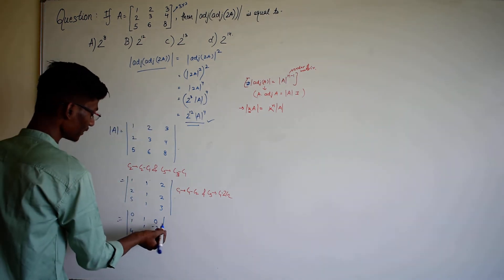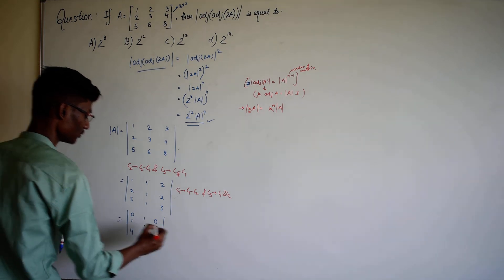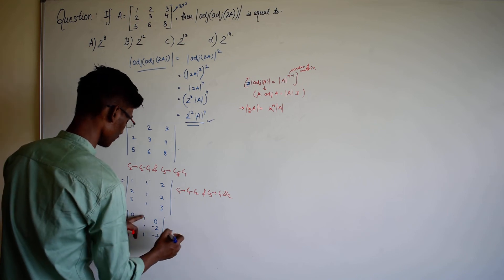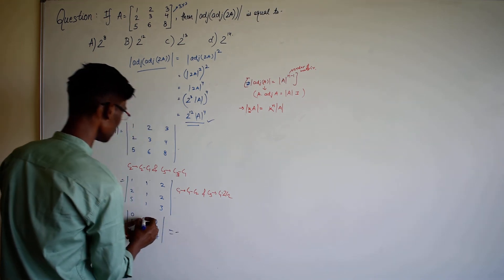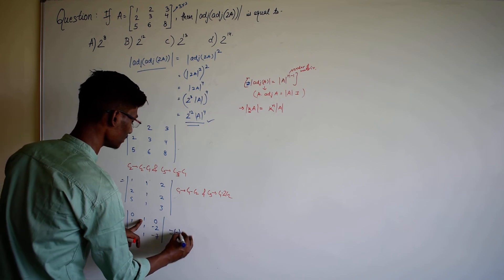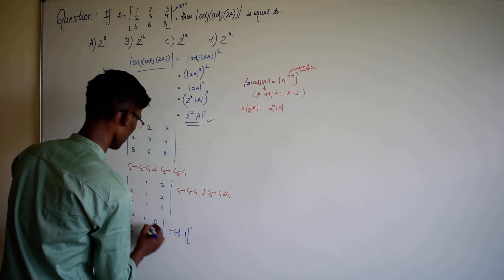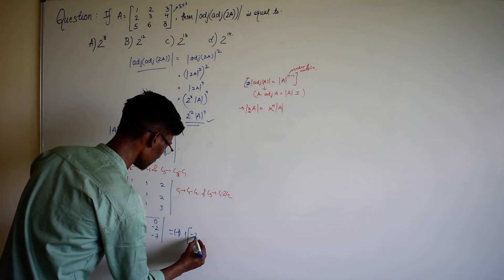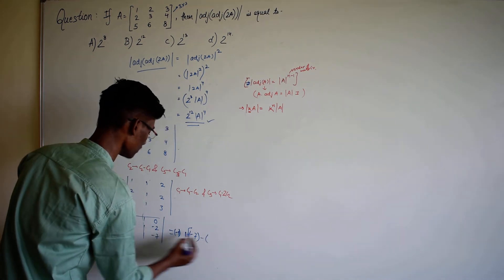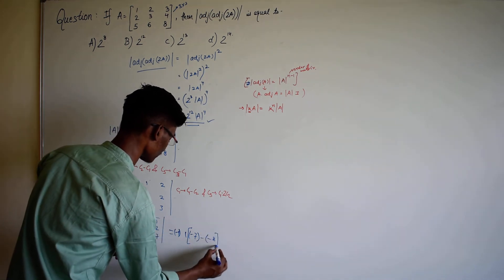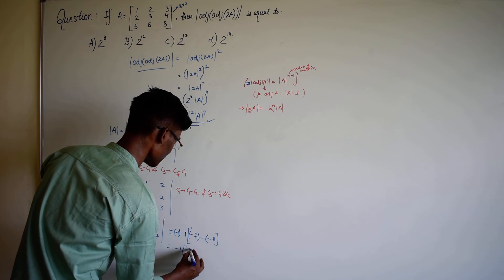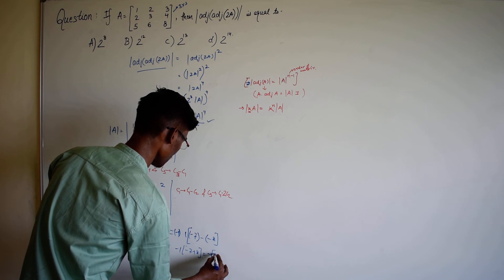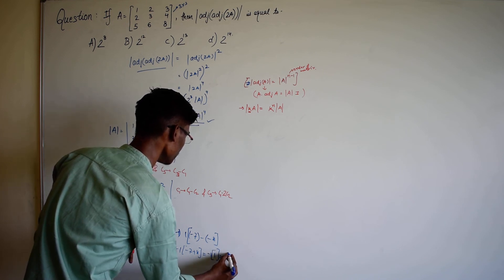The resulting matrix has entries 0, 1, 2; 1, 1, 2; 1, 1, 1. Expanding along row 1 and applying the appropriate signs, we get minus 1 times the 2×2 minor, which gives minus 7 times minus 8. Simplifying: minus 1 times (minus 7 plus 8), which equals minus 1 times 1, giving us negative 1.